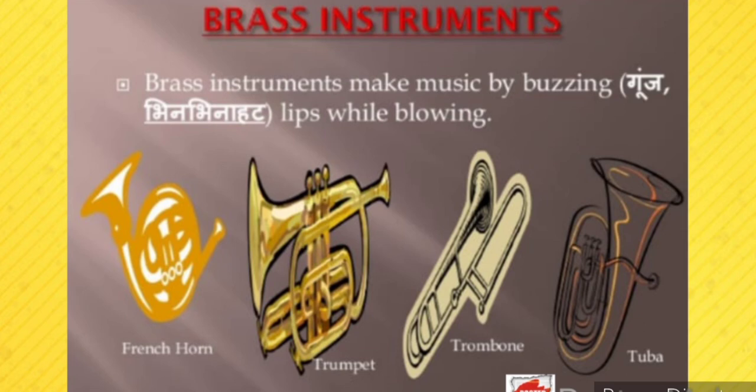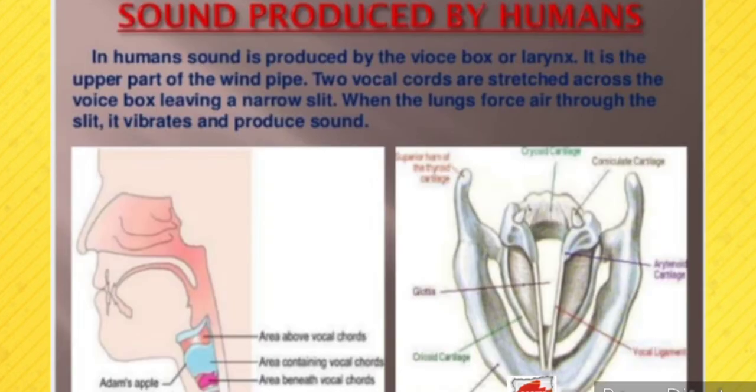Sound produced by humans: in humans, sound is produced by the voice box, or larynx, which is the upper part of the windpipe. Two vocal cords are stretched across the voice box, leaving a narrow slit. When the lungs force air through the slit, it vibrates and produces sound.